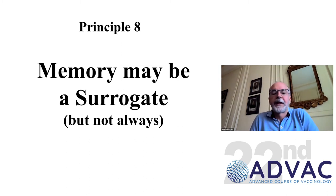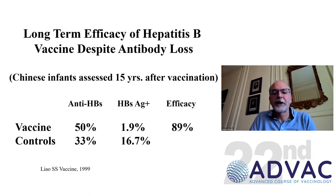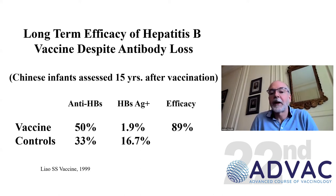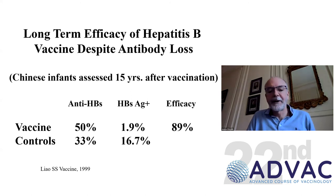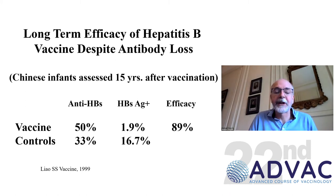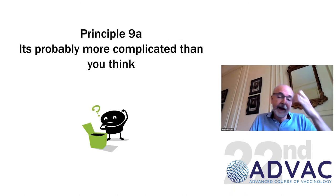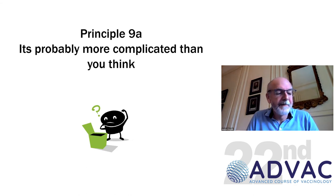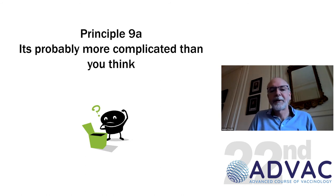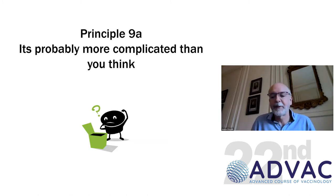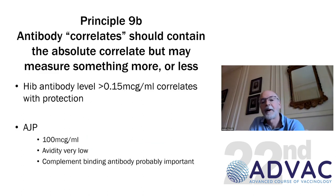It is important to consider not just the immediate production of immune responses but also memory as an important component of protection. With hepatitis B, even though antibody levels wane over time and can completely disappear, the vast majority of people even decades later are still protected because they have memory. It is the memory response during the long incubation period for hepatitis B which is sufficient to confer protection even after antibody levels have disappeared. Whatever you do in trying to understand the immune system, it is much more complicated than it appears.